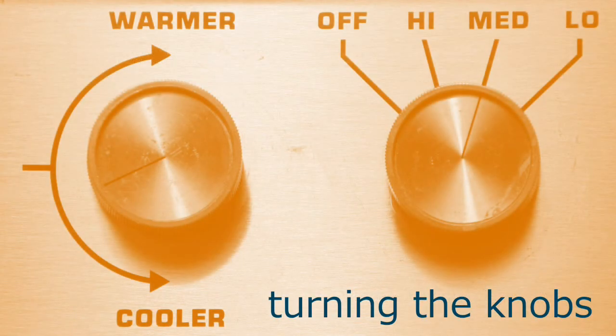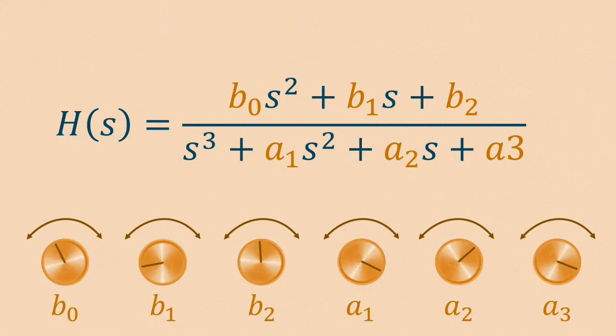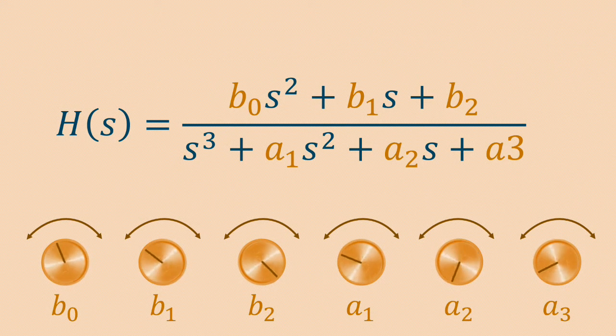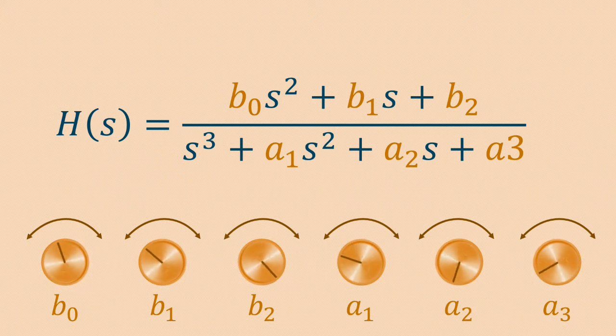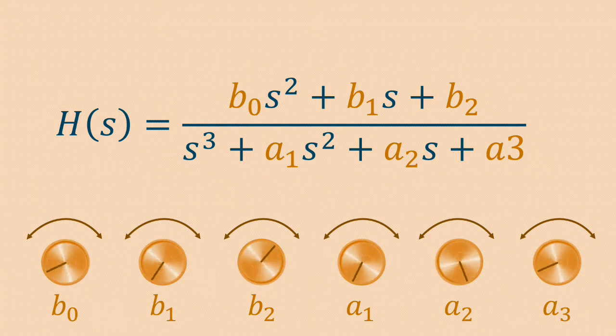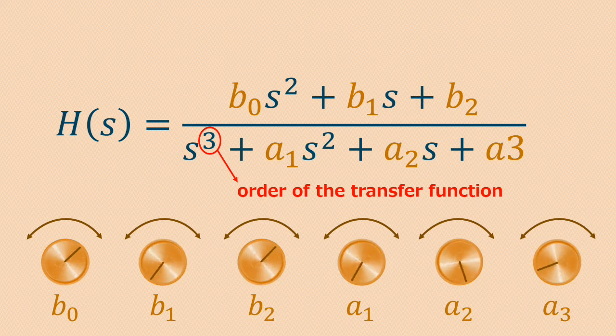Today's session is about turning the knobs. Turning the knobs here means to understand what happens when we change the order and the values of the parameters of the system's transfer function. The order of the transfer function is the degree of the denominator, which is the same as to say its number of poles.